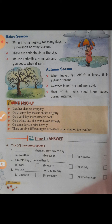There are dark clouds in the sky. We use umbrellas — jab varsha hoti hai tab hum chhaata (umbrella), raincoats, aur gumboots ka prayog karte hain.